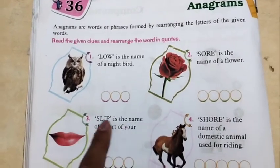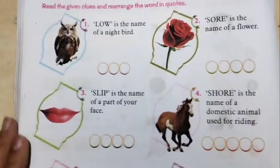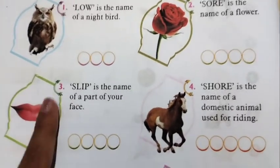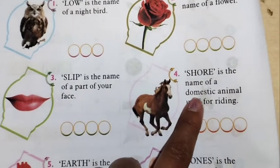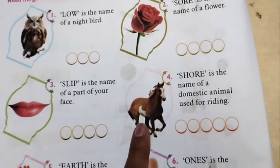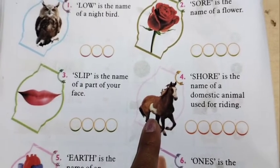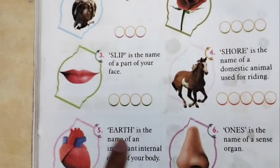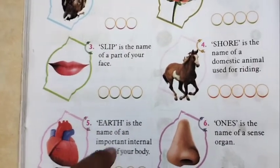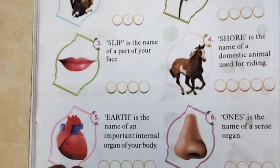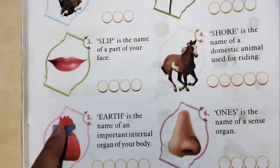SLIP is the name of a part of your face. Which part of the face uses S-L-I-P — those four alphabets? That is LIPS. SHORE is the name of a domestic animal used for riding — that is HORSE. EARTH, when rearranged, gives the name of an important internal organ of our body — that is HEART.